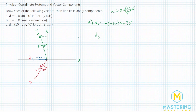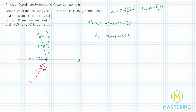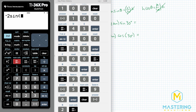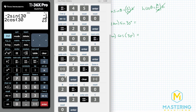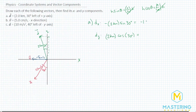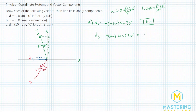For the y component, it's adjacent to the angle, so we'll use cosine — adjacent over hypotenuse. Multiplying both sides by h, the hypotenuse is 2 kilometers. Since it's in the positive y direction, it's 2 kilometers times cosine of 30 degrees. So negative 2 times sine of 30 gives us negative 1, and positive 2 times cosine of 30 gives us root 3, which is 1.7. So d sub x equals negative 1 kilometer and d sub y equals positive 1.7 kilometers.